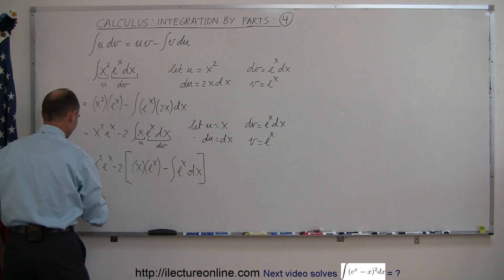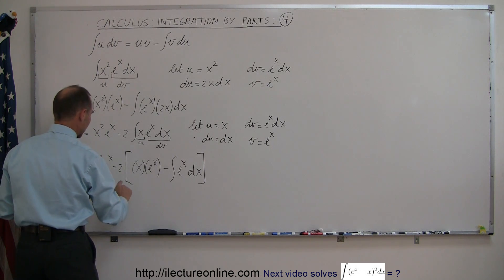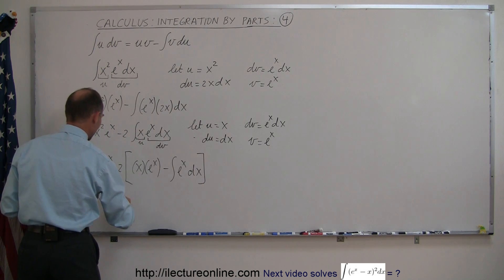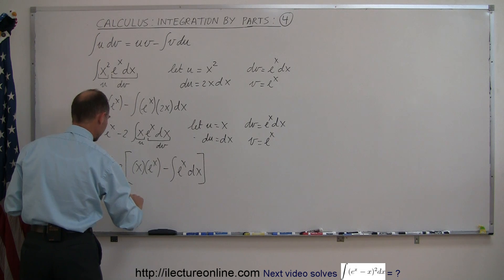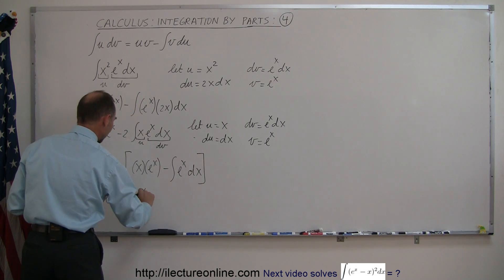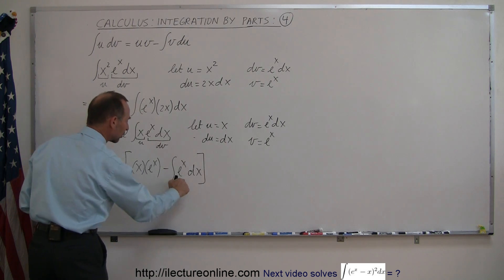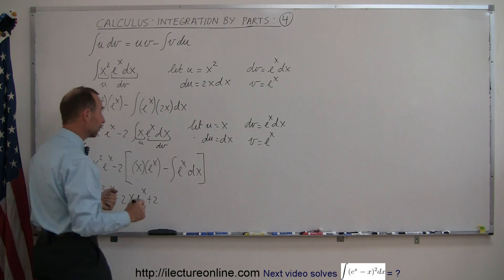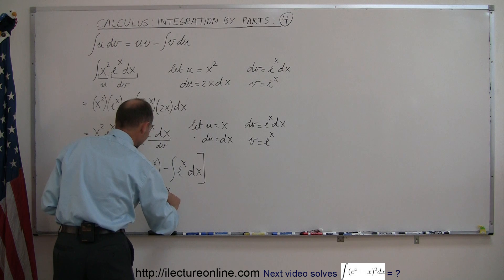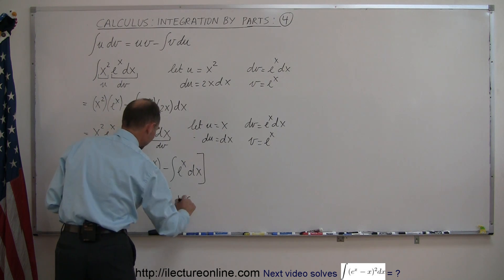So now we're going to write this as x squared e to the x minus 2 times x e to the x. And then minus 2 times a minus becomes plus 2 times the integral of e to the x. And the integral of e to the x is e to the x. And then we still have our constant of integration.